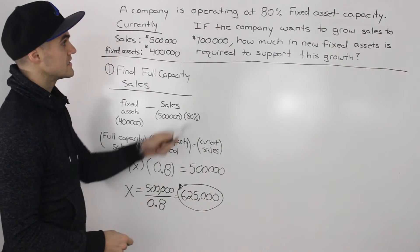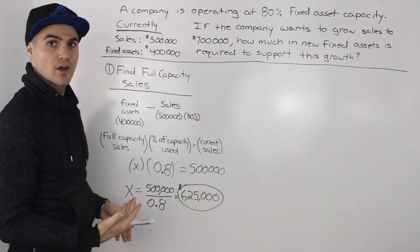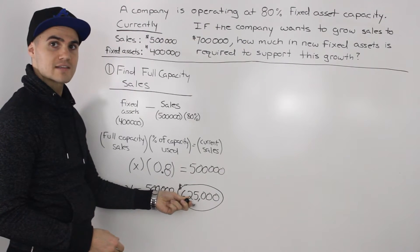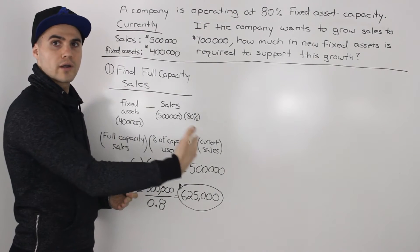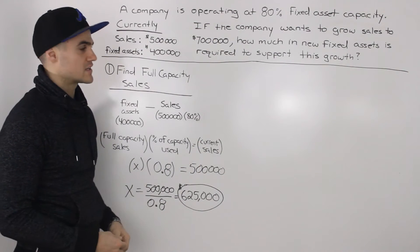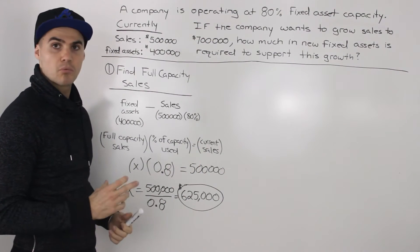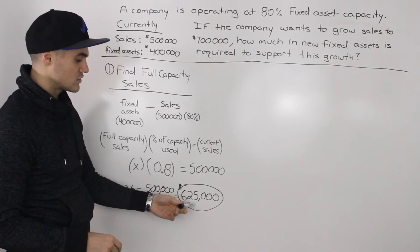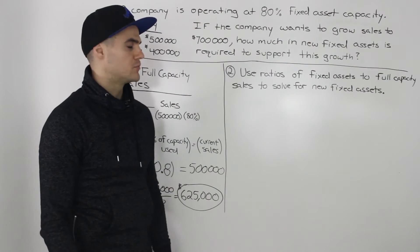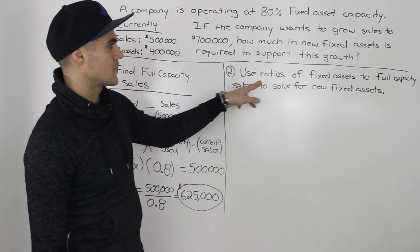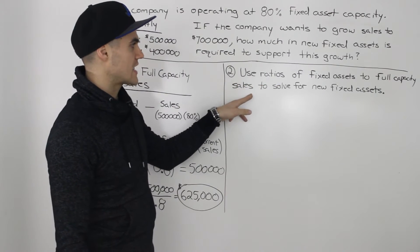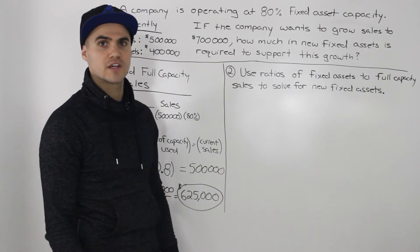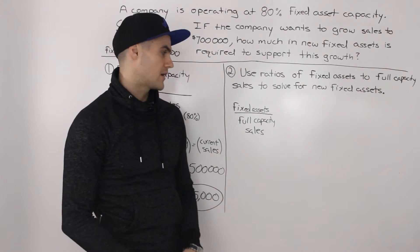Since we want to grow sales to $700,000, which is a number higher than the full capacity sales of $625,000, we know that we're going to have to purchase additional new fixed assets to support that growth. But you had to do this calculation first to know that. Now we can move on to step two: using ratios of fixed assets to full capacity sales to solve for new fixed assets.